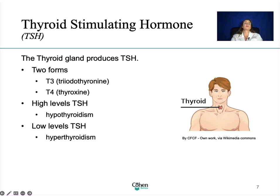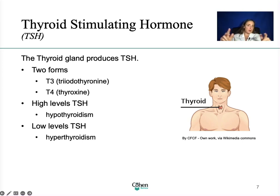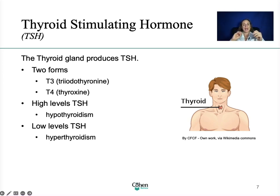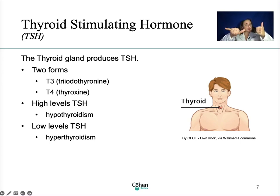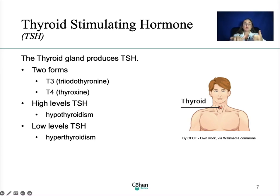Feel comfortable interpreting the results of TSH. There are two terms to become familiar with: primary hypothyroidism and subclinical hypothyroidism. Primary hypothyroidism means the TSH is elevated and the T3 or T4 are low. Subclinical hypothyroidism means the TSH is high but the T3 and T4 could be normal. Maybe eventually if untreated, you'll convert into primary hypothyroidism — but right now that's subclinical hypothyroidism: high TSH, normal T3 or T4.